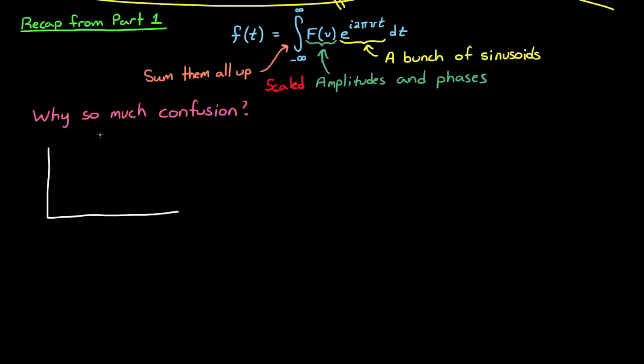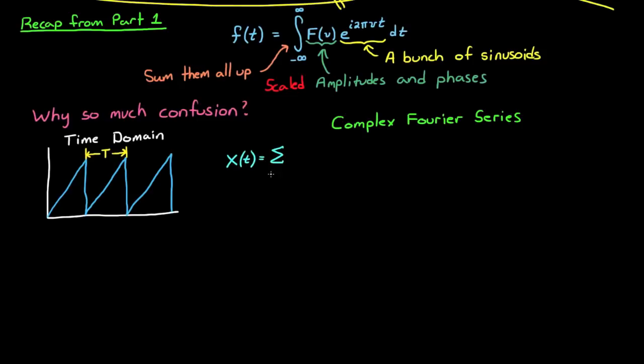We'll start with a time signal that's periodic over the period t. In this case I'm using a ramp function. If you wanted to represent this time function in the frequency domain, then the complex Fourier series is the transform of choice. The Fourier series is used for periodic time functions, and converts a continuous time signal into a discrete frequency signal.